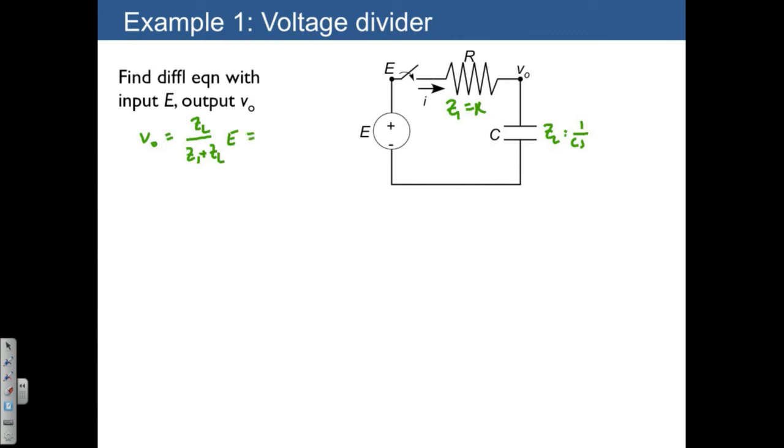Z2 is just 1 over CS, so we end up with 1 over CS divided by R plus 1 over CS times E. We can rewrite this by multiplying both sides by R plus 1 over CS, so we end up with R plus 1 over CS times VO equals 1 over CS times E.